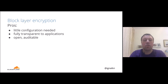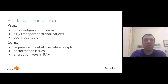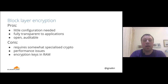Block layer encryption — encryption in the OS block subsystem — is very similar to hardware disk encryption in that it requires little configuration and is fully transparent to your application. But if you run an open source OS like Linux, it's open and auditable. The downsides: it requires somewhat specialized crypto because conventional stream ciphers aren't well-suited to encrypting random block storage. It may have a performance impact, and your encryption keys are stored in main RAM, making them more vulnerable to RAM-based attacks.